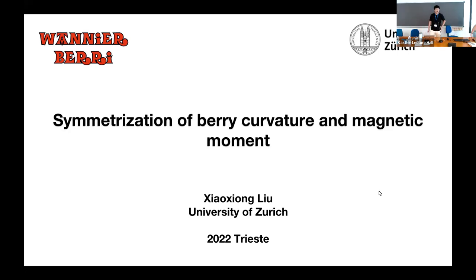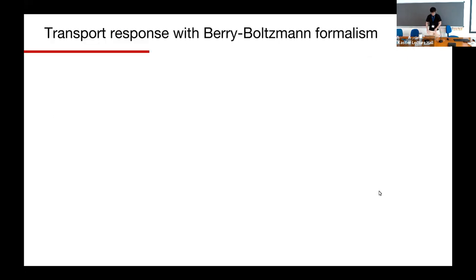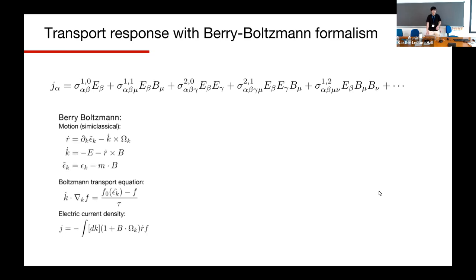Okay, hello everyone. I'm very happy to be able to talk today. In this talk, I will talk about how to symmetrize the Berry curvature and magnetic moment with Wannier interpolation. At first, I will talk about why I need the symmetry. Recently, I'm trying to calculate the conductivity as a response function of different orders of electric field and magnetic field. And all the conductivities can be solved by a Berry-Boltzmann equation.